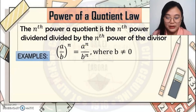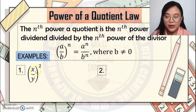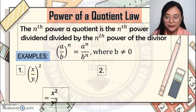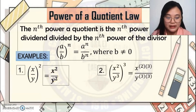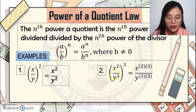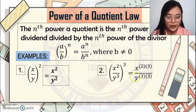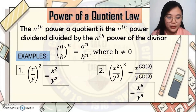Example 1: (x over y) raised to 2. Distribute squared to x and y — it becomes x squared over y squared. Next example: (x squared over y cubed) raised to 3. Distribute 3 to x squared and y cubed — it becomes x to the 6th over y to the 9th.